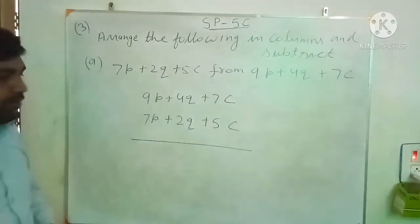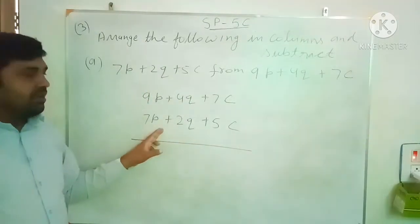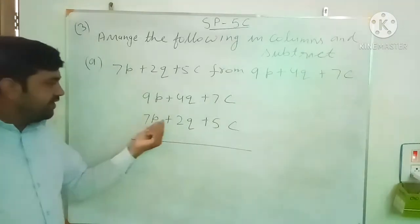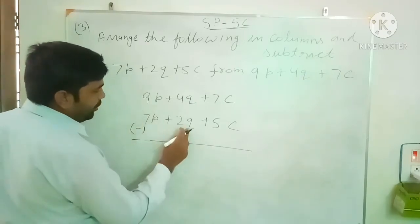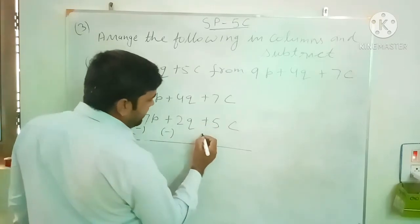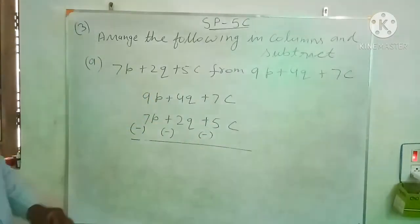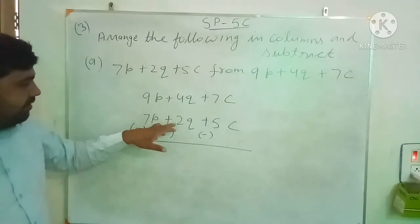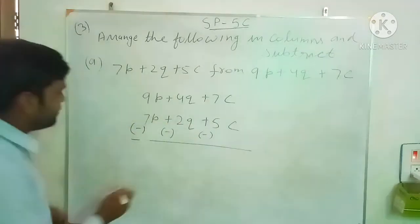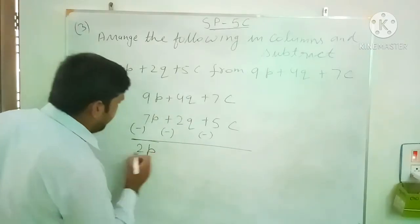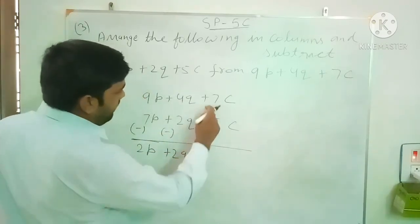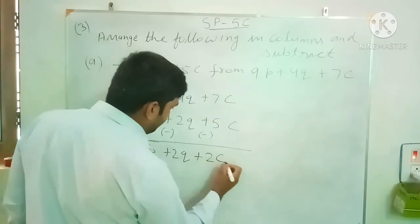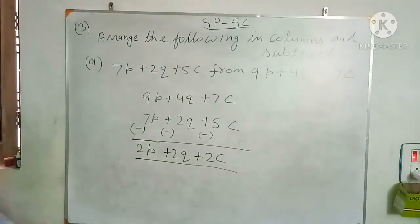For subtraction, change the sign of each term of the lower expression. 7p is positive, make it negative. 2q is positive, make it negative. 5c is positive, make it negative. Now consider only the new signs. 9p minus 7p gives 2p. 4q minus 2q gives plus 2q. 7c minus 5c gives plus 2c. So the answer for 3a is 2p plus 2q plus 2c.